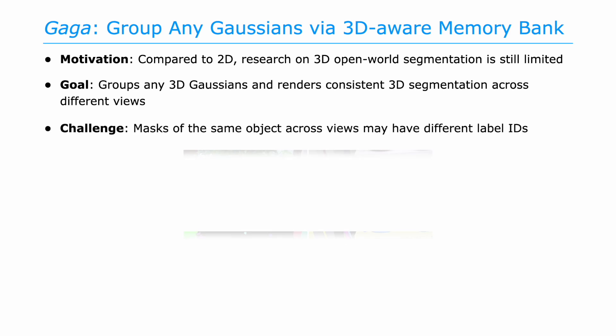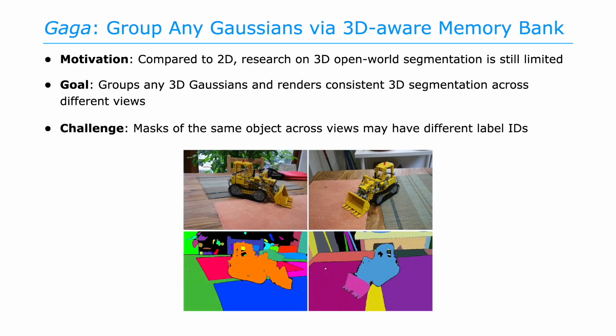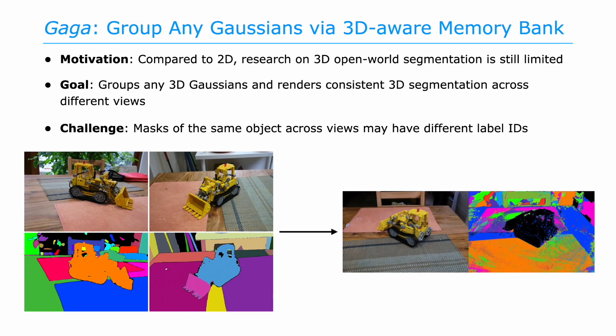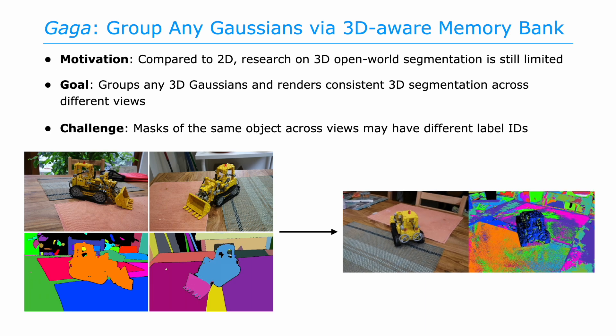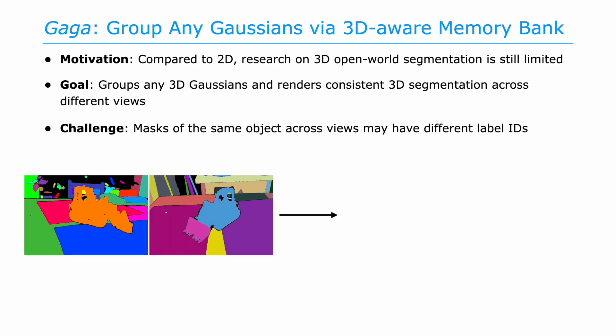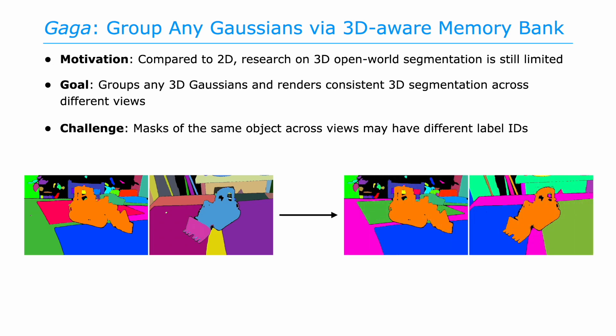The main challenge of using 2D segmentation for 3D supervision is that as multi-view images are processed by the 2D segmentation model individually, masks of the same object across different views may have different label IDs. Naively lifting these inconsistent 2D masks to 3D introduces ambiguity and leads to inferior results in 3D scene segmentation. Hence, it is crucial to assign each mask a multi-view consistent universal mask ID before lifting them to 3D — we refer to this task as mask association.